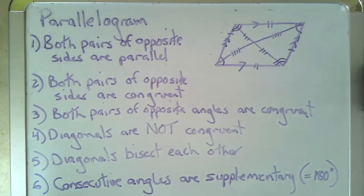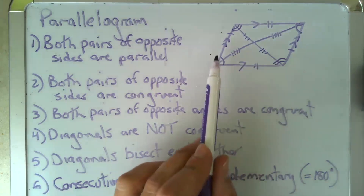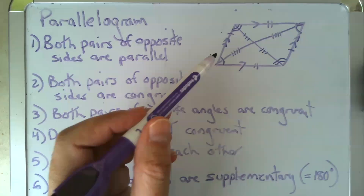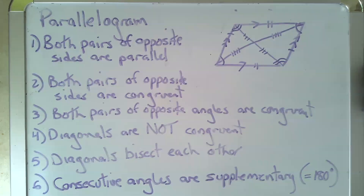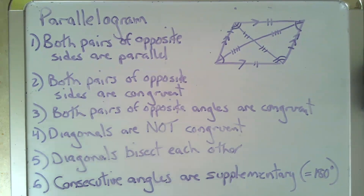Consecutive angles are supplementary, equaling 180. So this angle plus this angle equals 180, this angle plus this angle equals 180, and so on and so forth. This would be a great time for a screenshot.